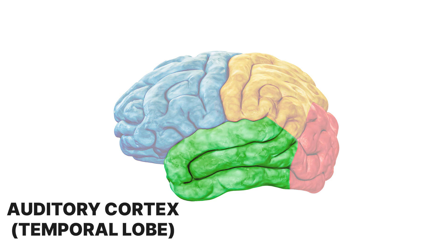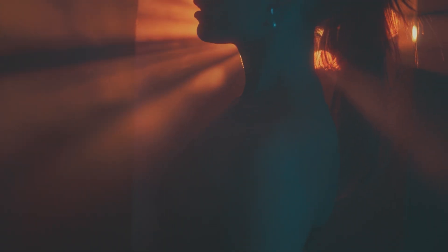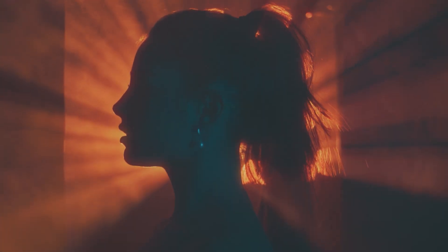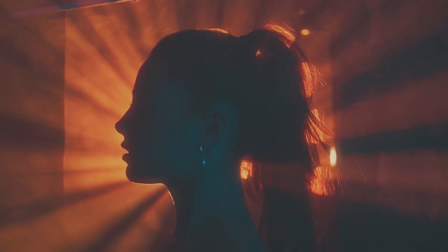Next up, we have the auditory cortex, which is located in the temporal lobe and where sound takes center stage. When this area misfires, it can lead to hearing voices or sounds that nobody else can hear.